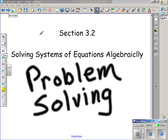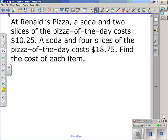How to write a system of equations for a given problem solving situation and then solve the system itself. In this example, at Rinaldi's Pizza, a soda and two slices of pizza of the day cost $10.25. A soda and four slices of pizza of the day cost $18.75. Find the cost of each item.